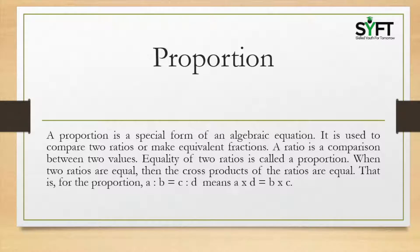Proportion is a special form of an algebraic equation. It is used to compare two ratios or make equivalent fractions. A ratio is a comparison between two values. Equality of two ratios is called a proportion. When two ratios are equal, the cross products of the ratios are equal. That is, for the proportion a to b equal to c to d, a into d is equal to b into c.